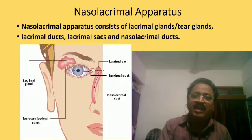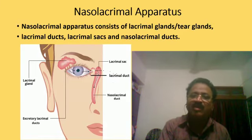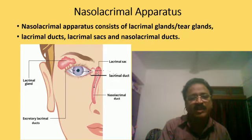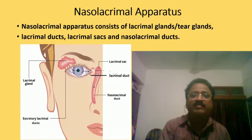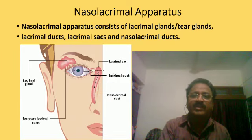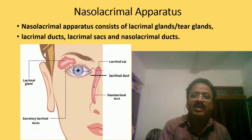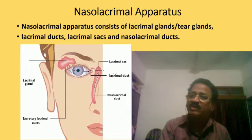The tear glands or lacrimal glands secrete tear which lubricates the eyeball, washes the eyeball, and kills the germs if any are present in the air that enters the eye. The tear also has the function of communicating one's emotions, though this point should not be mentioned as one of the functions of tear.